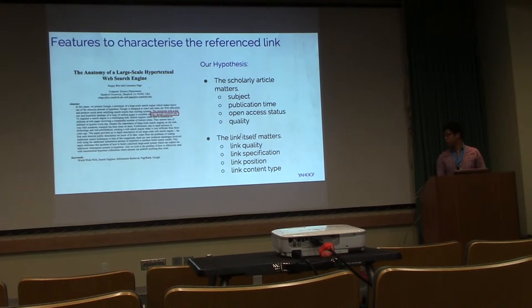For the link-based features, we hypothesize that high quality links might be less likely to rot. If the link is more specific, that is, it has more depth or is longer, it might be more likely to rot. Also, where the link appears in the article might have an effect. If the link appears in the abstract, it might be less likely to rot than links that appear in the footnote. And also, what is the content type of the link would make a difference. The code might be more likely to rot than data.